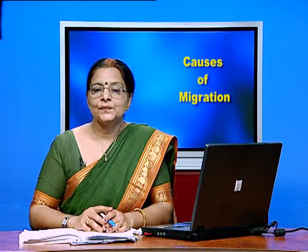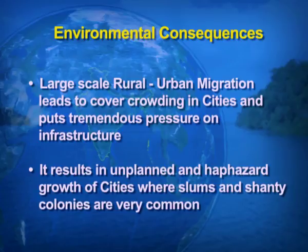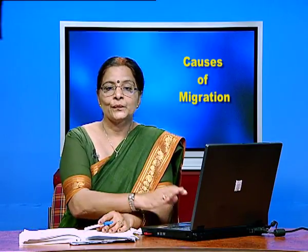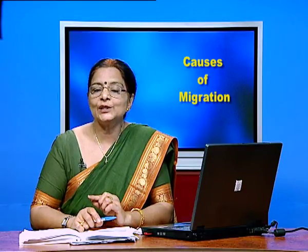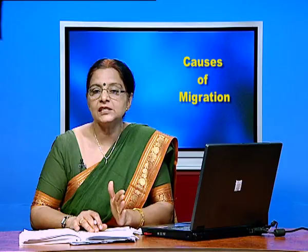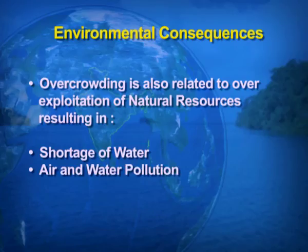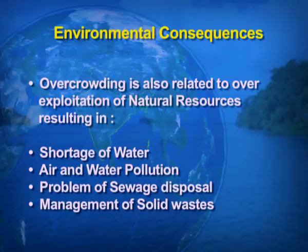Now the environmental consequences. Large-scale rural-urban migration leads to overcrowding in cities and puts tremendous pressure on infrastructure. It results in unplanned and haphazard growth of cities with slums and shanty colonies — unauthorized colonies established because of shortage of space. Overcrowding is also related to over-exploitation of natural resources, which is a negative impact of migration. People face shortages of water, air and water pollution, problems of sewage disposal, and management of solid waste.